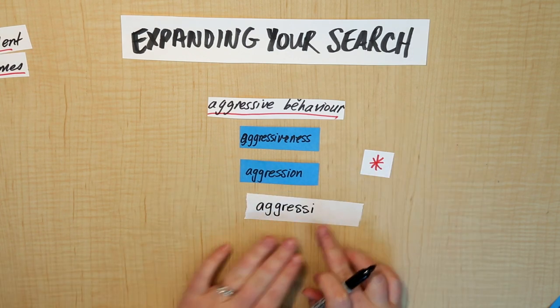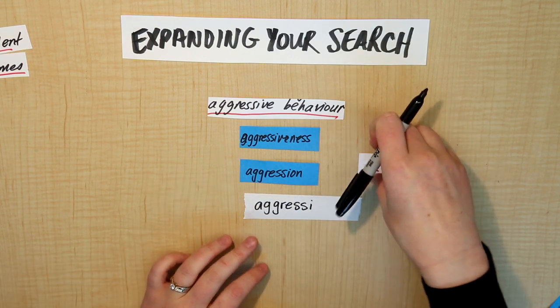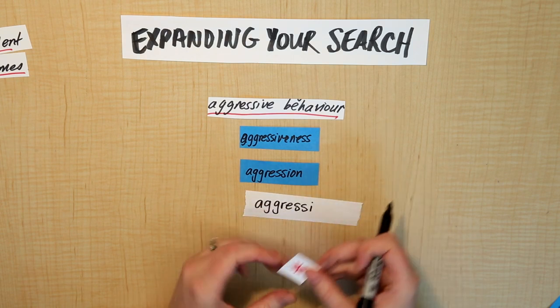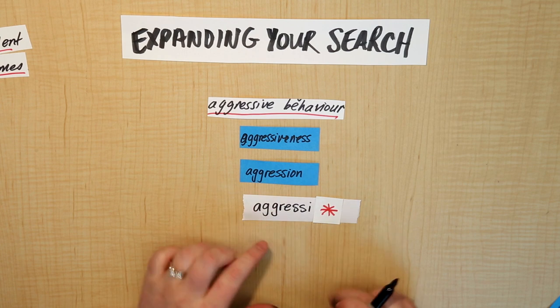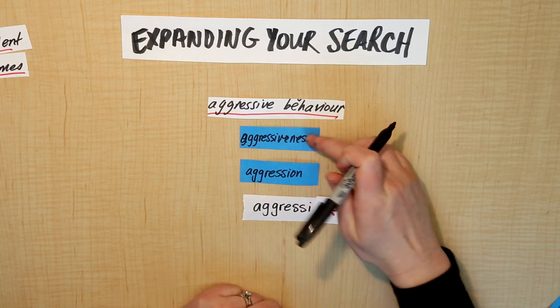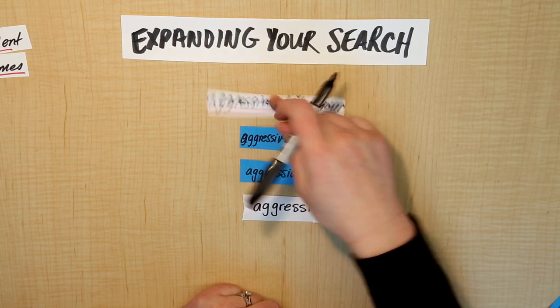That's the root. If you put the star at the end of it, you'll get any word that starts with that root but has any ending. So aggression will be found, aggressiveness will be found, and aggressive will be found.